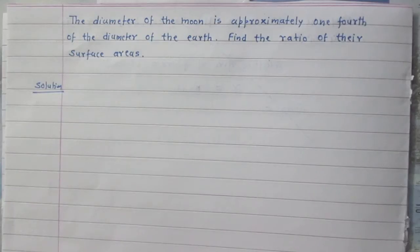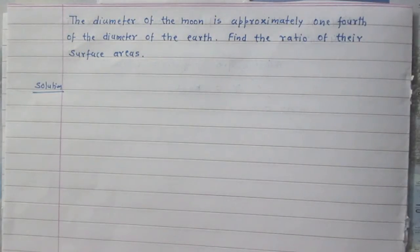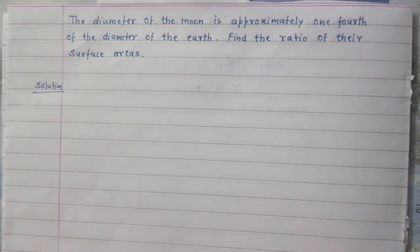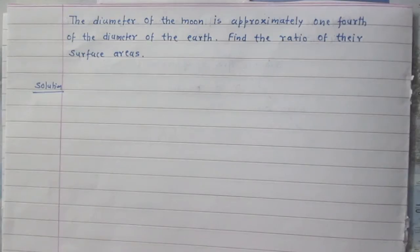The diameter of the moon is approximately one-fourth of the diameter of the earth. Find the ratio of their surface areas. We are given that the diameter of the moon is smaller than the diameter of the earth, and the diameter of the moon is one-fourth of the diameter of the earth. We are to find the ratio of their surface areas.